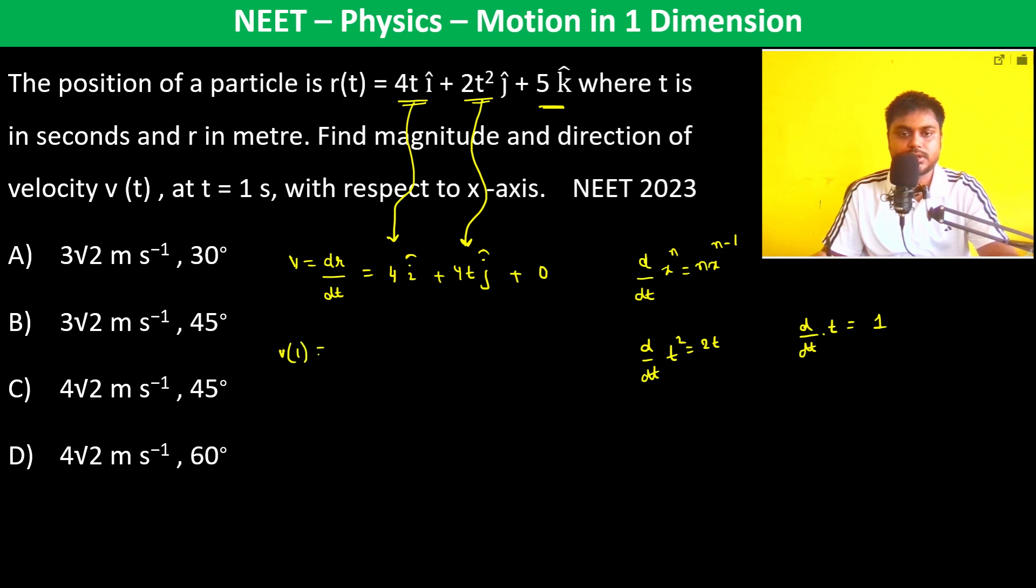Therefore, the velocity at t = 1 second is 4î + 4ĵ. The magnitude becomes √(4² + 4²) = 4√2 meters per second.